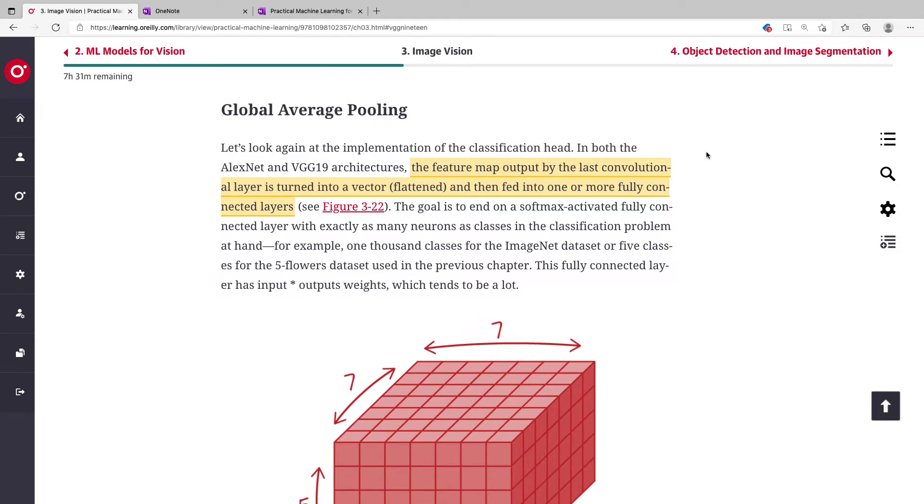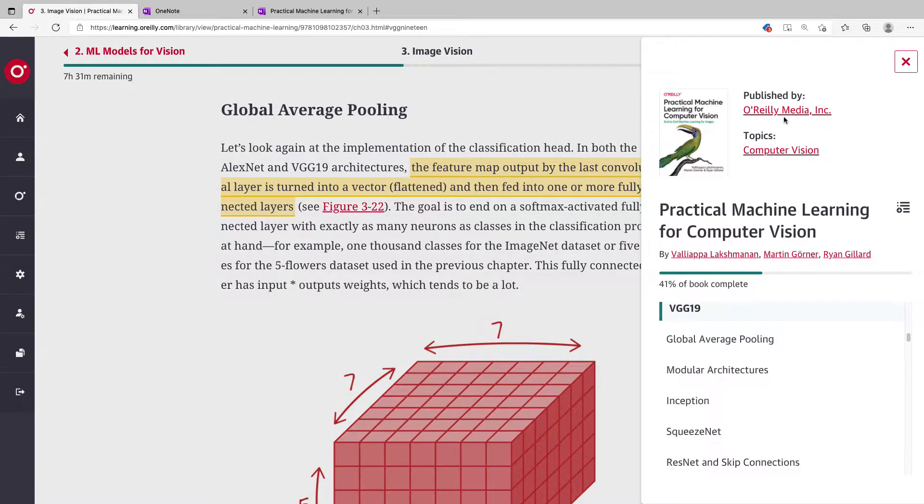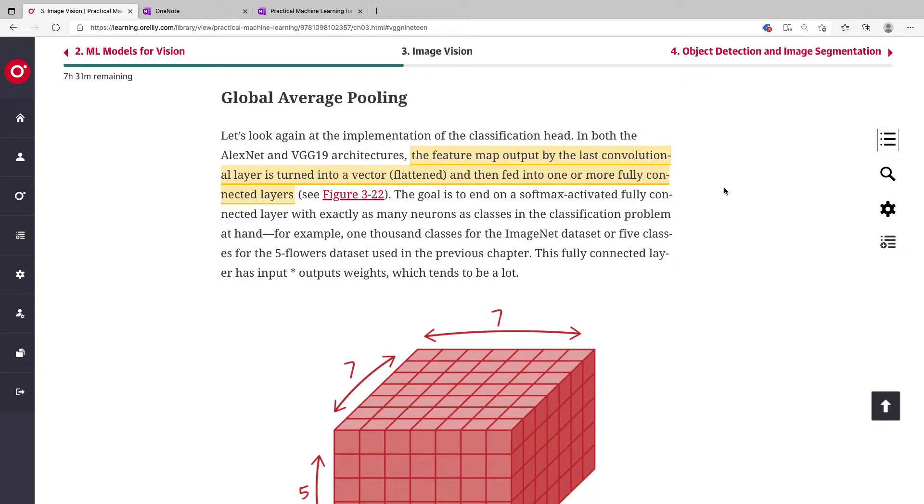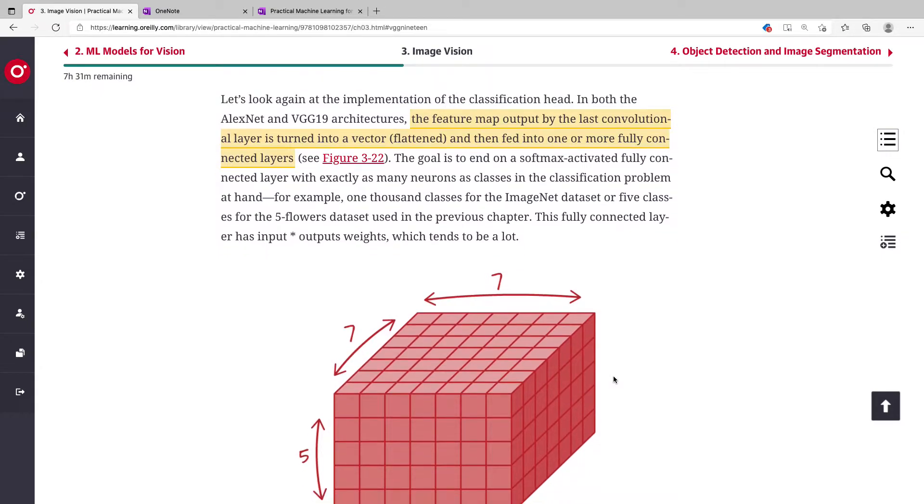Another very important concept in design of deep learning architecture is global average pooling. I love the way they explain it in this textbook, I highly recommend it.